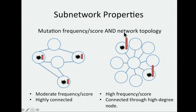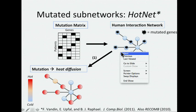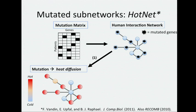One way we can model this has a nice physical interaction — thinking of the mutations as sources of heat on the graph. The idea is that we have this interaction network. We heat up the genes in proportion to their frequency or their mutation score or some notion of significance at the gene level. That encodes the mutation part, and then to encode the topology, it allows that heat to diffuse over the edges. This encodes both the local topology, not just nearest neighbors but neighbors of neighbors, in a very continuous way. Now we have this distribution of heat on the graph. We break it apart by removing cold edges, and then we do a statistical test on top of that. So that's HotNet.